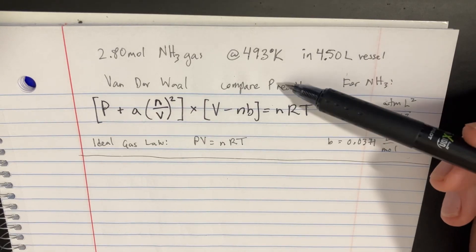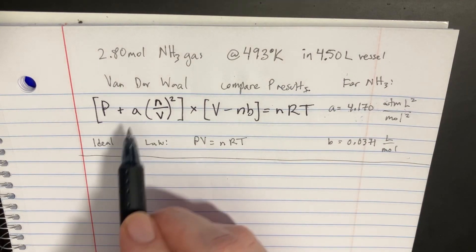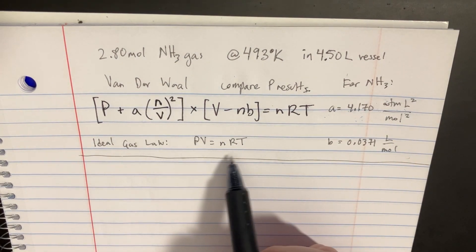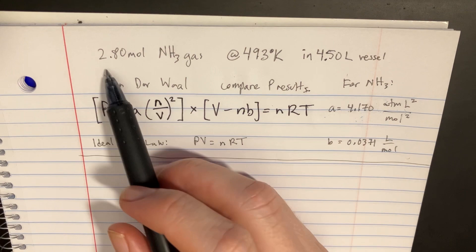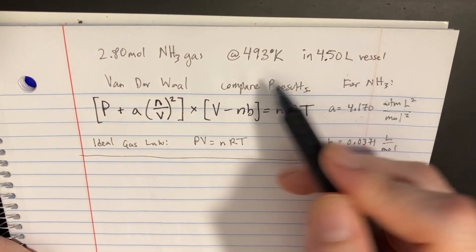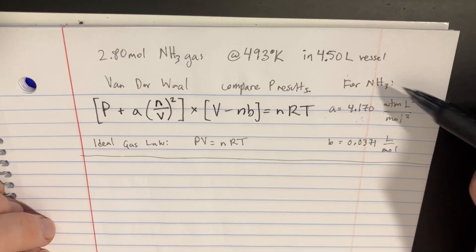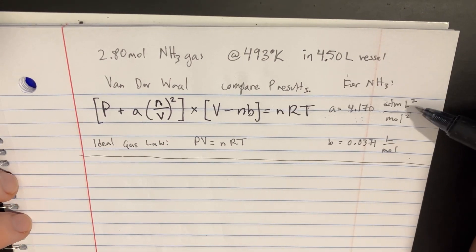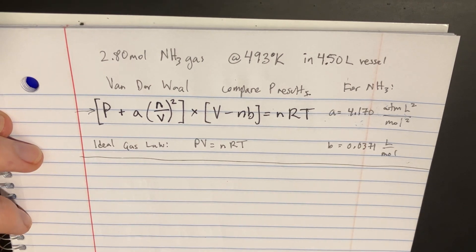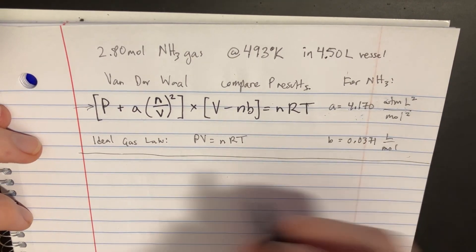Let's try to compare the results of pressure if we were to use the Van der Waals equation compared to the ideal gas law for 2.8 moles of ammonia gas at these certain states. So let's go ahead and try to rearrange this particular equation for P because we want to solve for P.